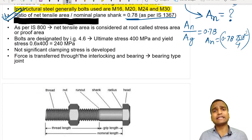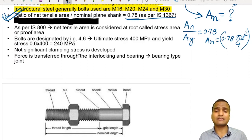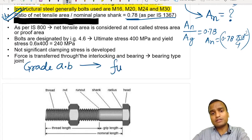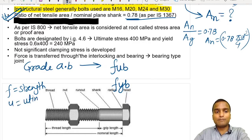Bolts are also designated in terms of strength using a grade system written as A.B. The ultimate strength of the bolt FUB = 100 × A, in MPa. The yield strength of the bolt FYB = 0.B × FUB, in MPa. These notations must be clear: F represents strength, U represents ultimate, B represents bolt, and Y represents yield.